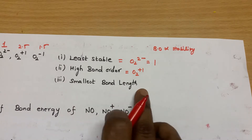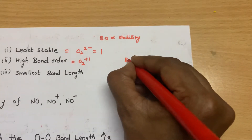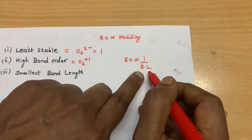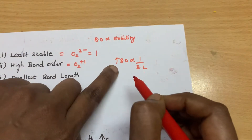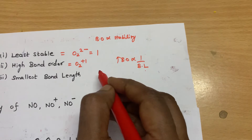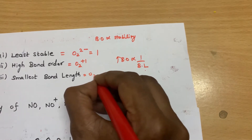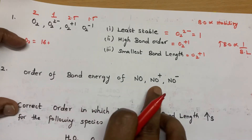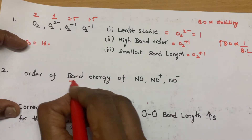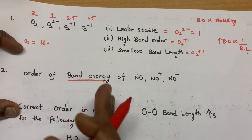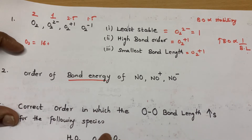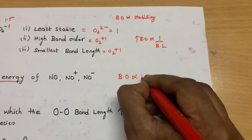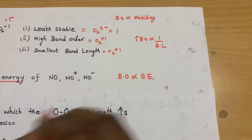The smallest bond length — the bond order is inversely proportional to bond length. So for the smallest bond length, the bond order should be high. So that is also O₂⁺. The bond energy is the energy required to break a bond. More the bond order, more will be the bond energy.